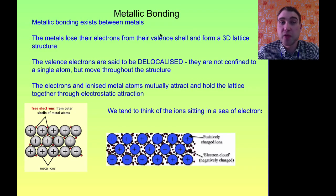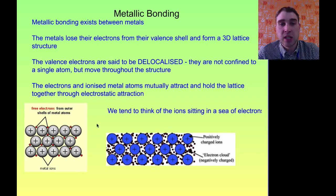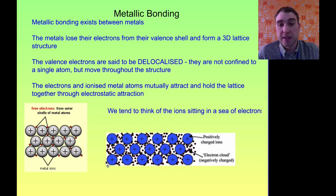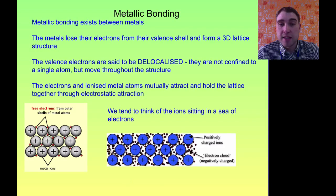In metallic bonding, you get bonds forming between metal ions. This could be in an element — for example, sodium atoms forming metallic bonds — or it could be in alloys, like copper and zinc mixed together. When the atoms stick together, the electrons from the valence shell separate off, giving you delocalised electrons floating between the metal ions. You get attraction between the positive ions and the electrons, and that holds the structure together. We usually think of it as a sea of delocalised electrons surrounding positive ions — that's electrostatic attraction.